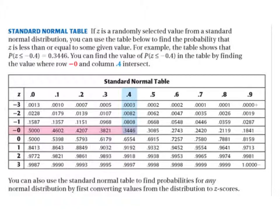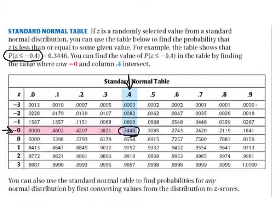Our standard normal table: if z is a randomly selected value from a standard normal distribution, you can use the table to find the probability that z is less than or equal to some given value. For example, the table shows that the probability that z is less than or equal to negative 0.4 is 0.3446. So we've got negative 0.4 — follow it down, follow it over — we have 0.3446. You find it where row negative 0 and column 0.4 intersect. You can also use the standard normal table to find probabilities for any normal distribution by first converting values to z-scores.